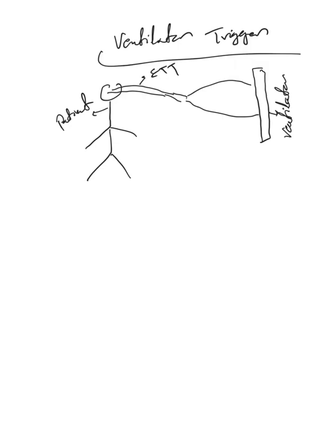Let's talk now about ventilator trigger. Excuse my drawing, but this is a ventilator here, and this is the inspiratory and expiratory limb, and this is the ET tube here going into the patient. Let's assume this patient is paralyzed.